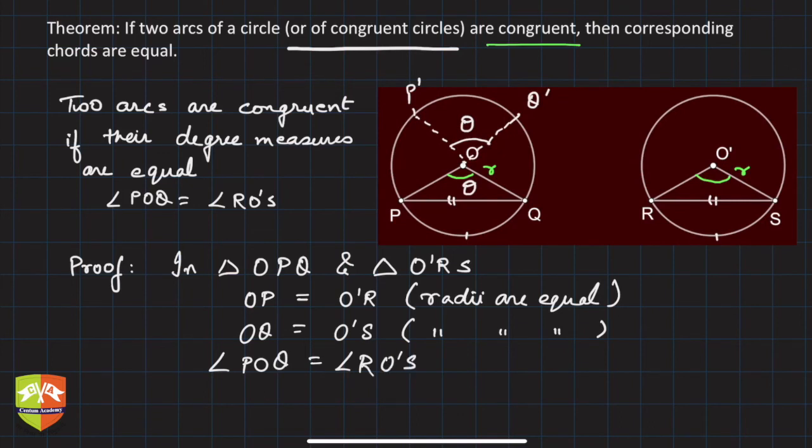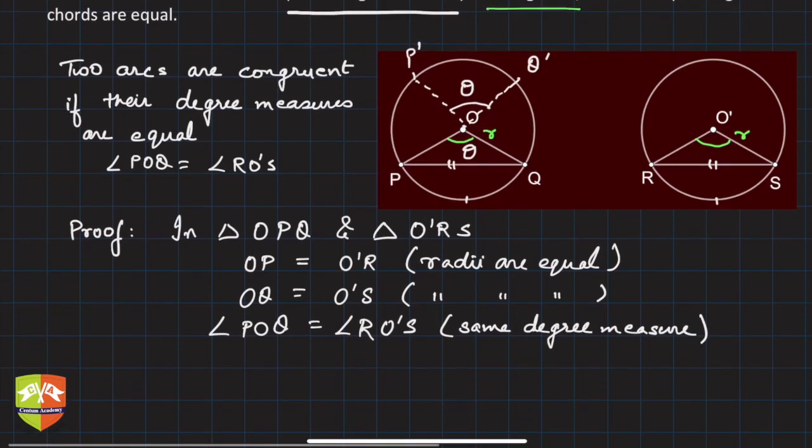Same degree measure, okay? Understood. Hence it indicates something—what does it indicate? It indicates that triangle OPQ is congruent to triangle O'RS.